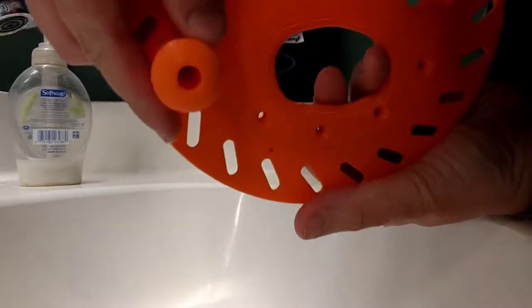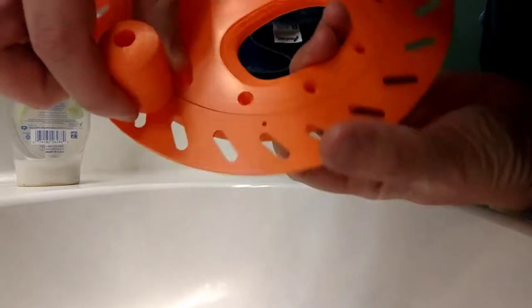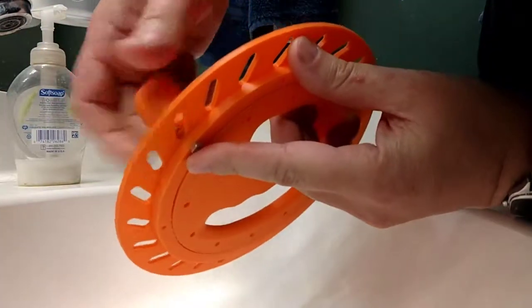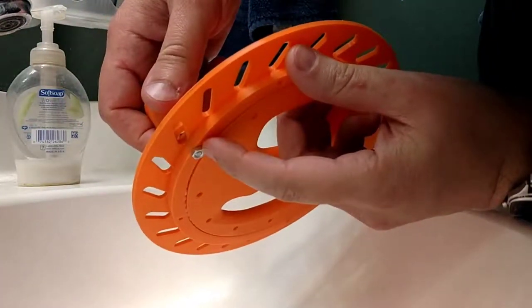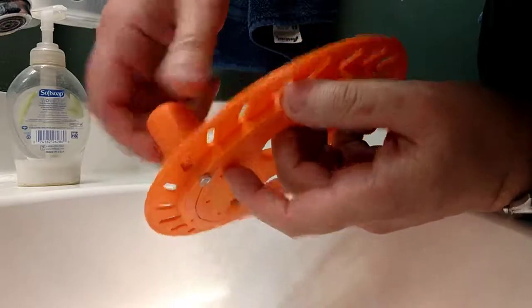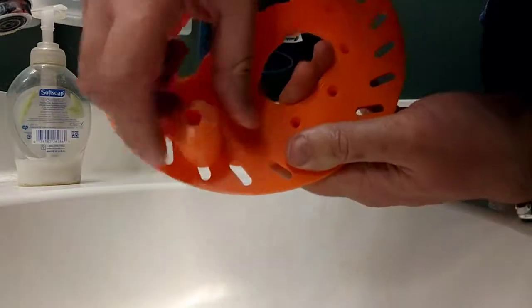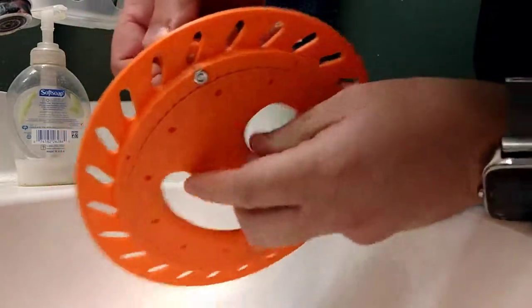Just put an M4 screw through there and a nut on the other side, or even if the hole is right sized you could just screw right into it. Time to make it nice and tight and bam, you've got yourself this awesome swivel handle. Check this out.